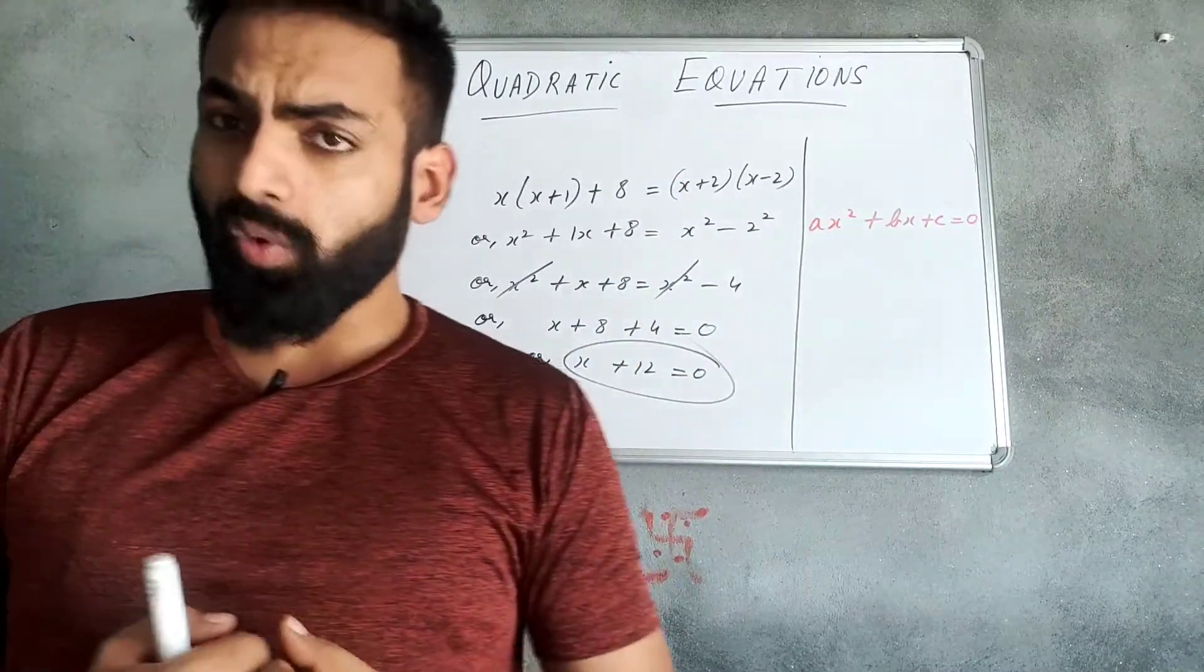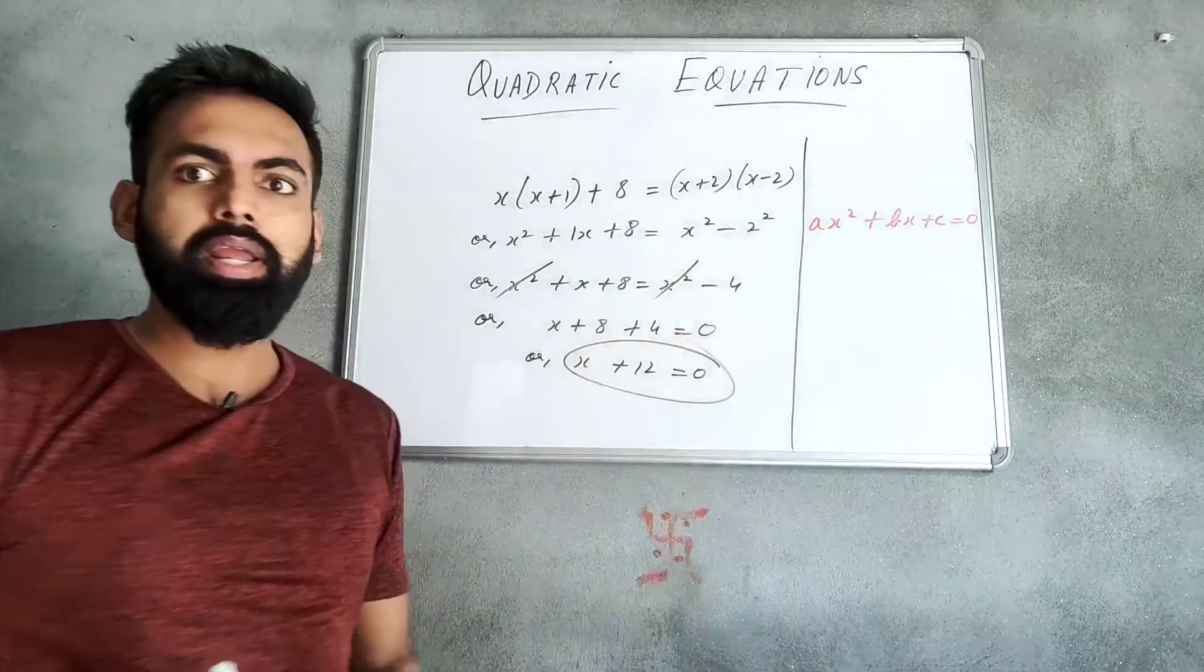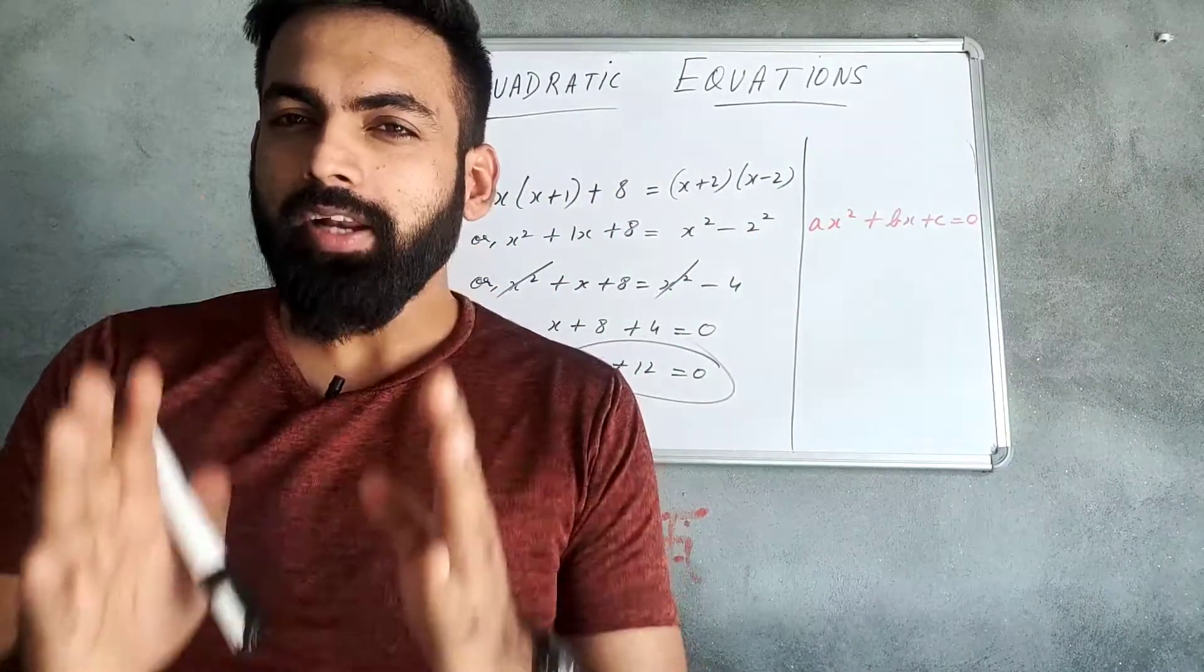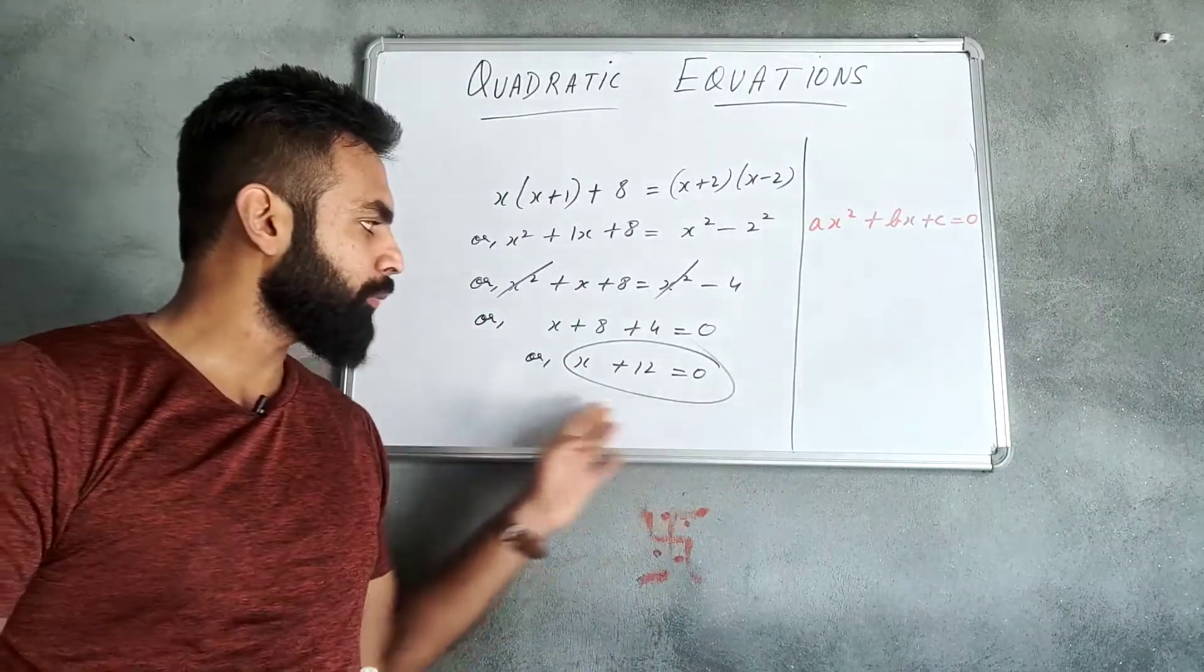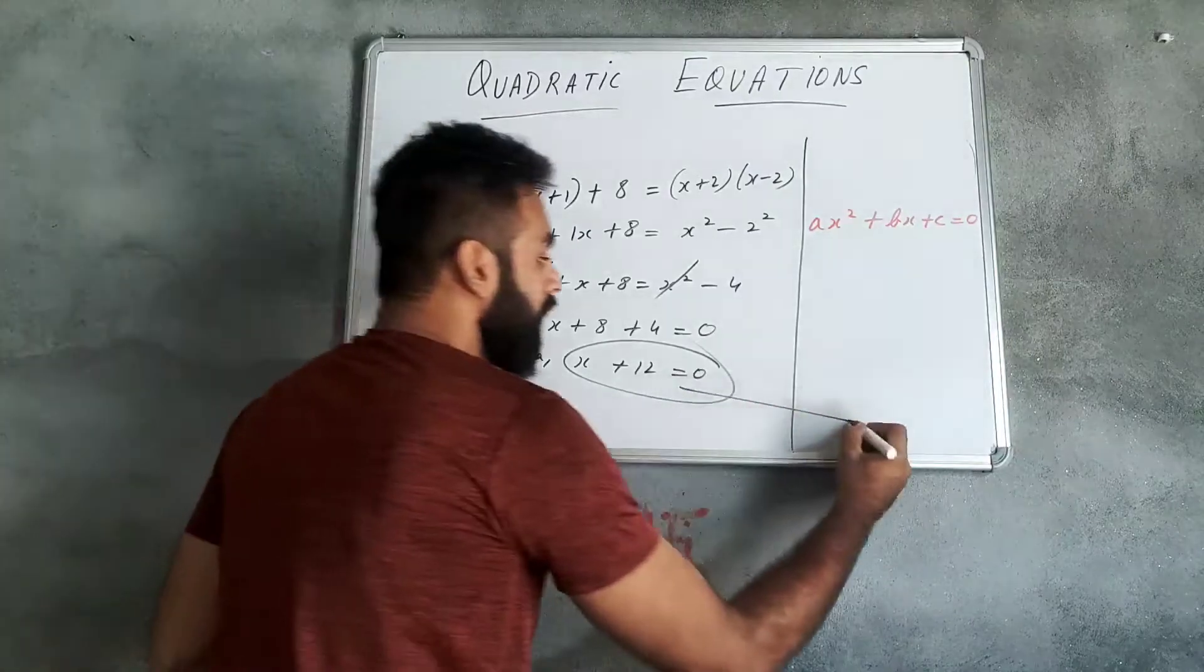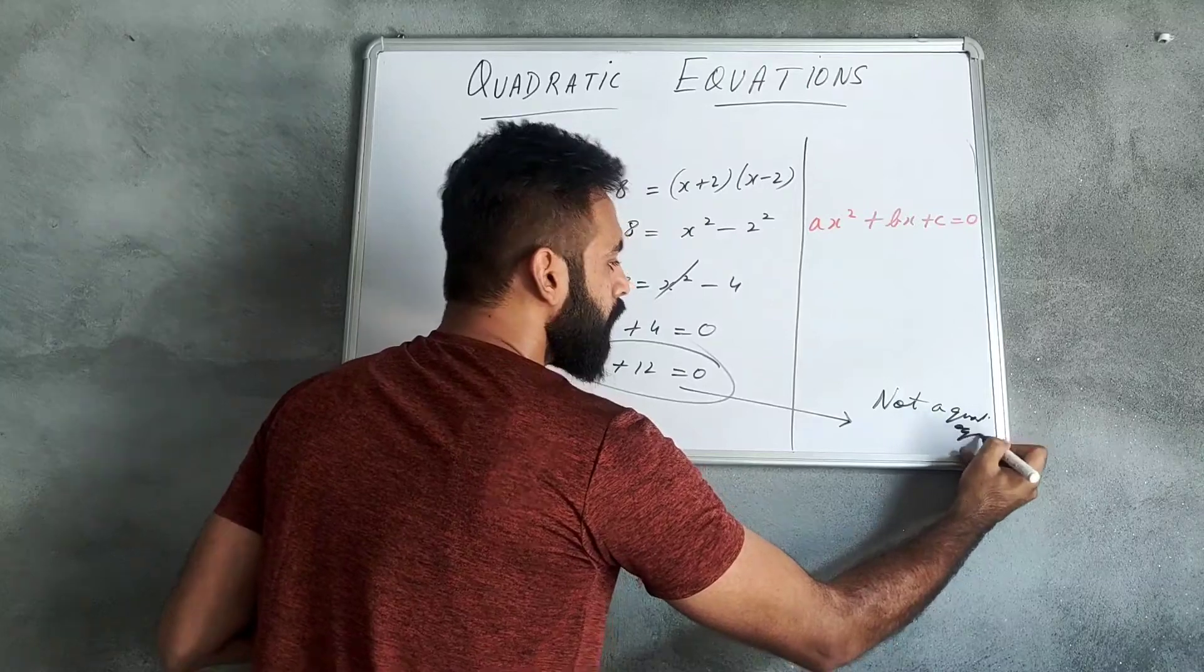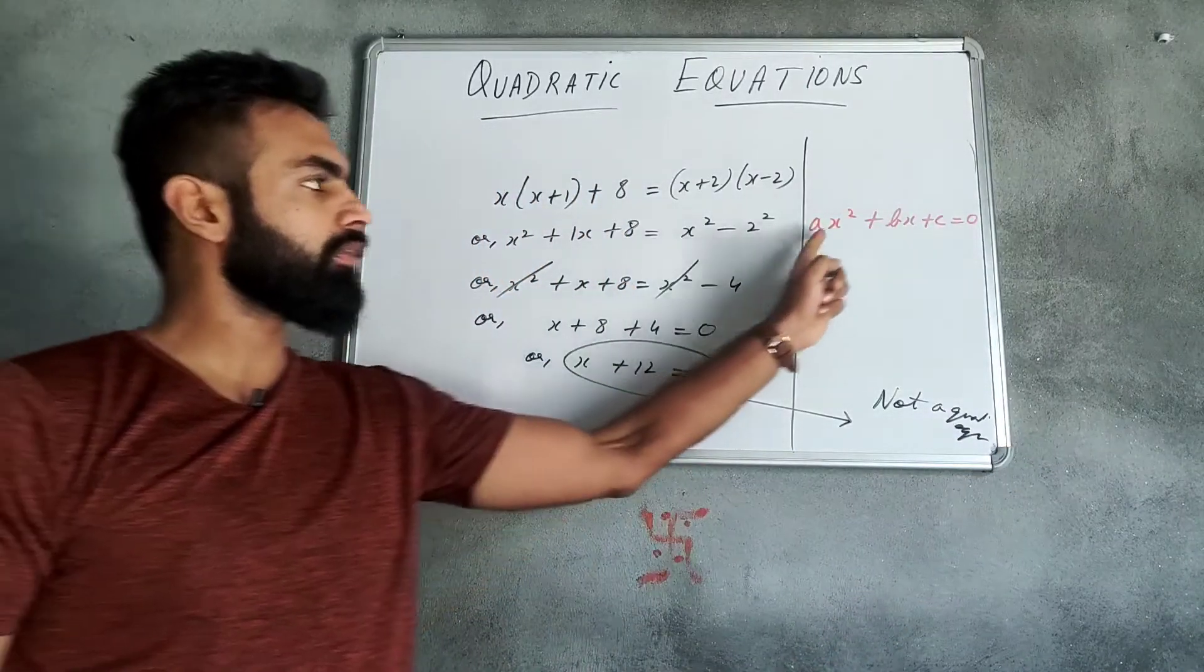Now, is it a quadratic equation? Look, it was like that x-square x-square will result in x-square. Right? But finally, what you have simplified, you know that x-square is not present. I call it not a quadratic equation. Why? Because x-square is not present.